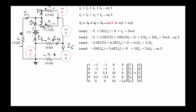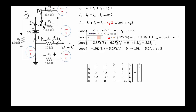For loop two, whether we start from this side or that side, in both cases we get: 6.2 kΩ × I2 = 3.3 kΩ × I3, which gives us 6.2·I2 = 3.3·I3.